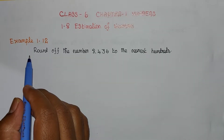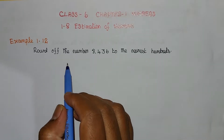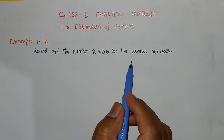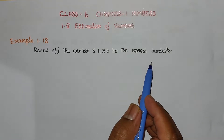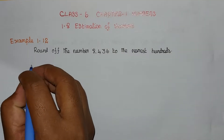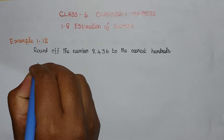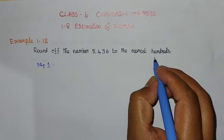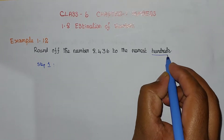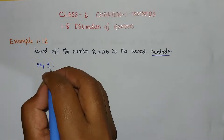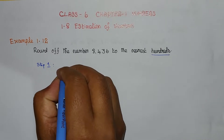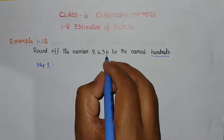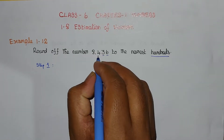Example 1.12: Round off the number 8436 to the nearest hundreds. Let's solve this in four steps. Step 1, we need to find the hundreds place value. In 8436, the hundreds place is 4. Ones turns to hundreds.